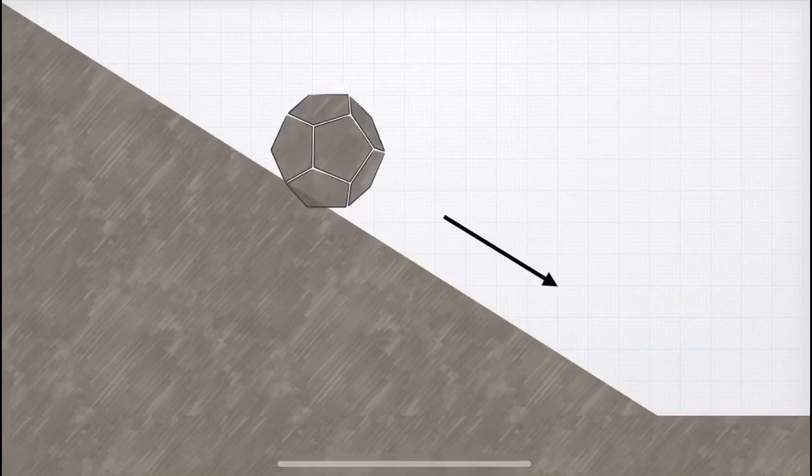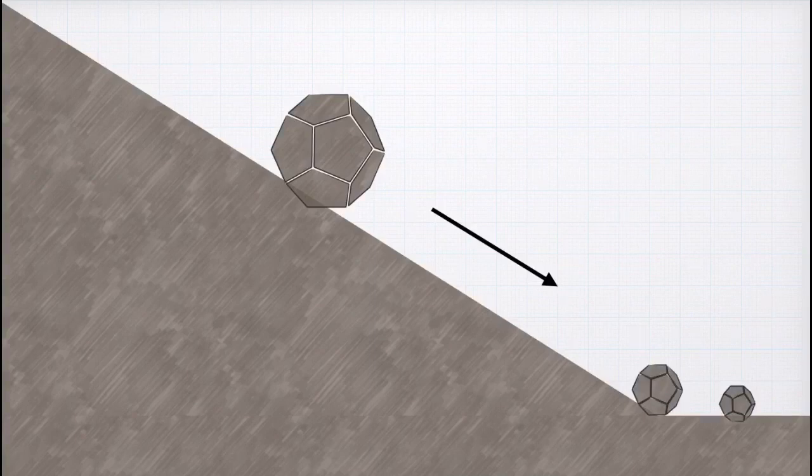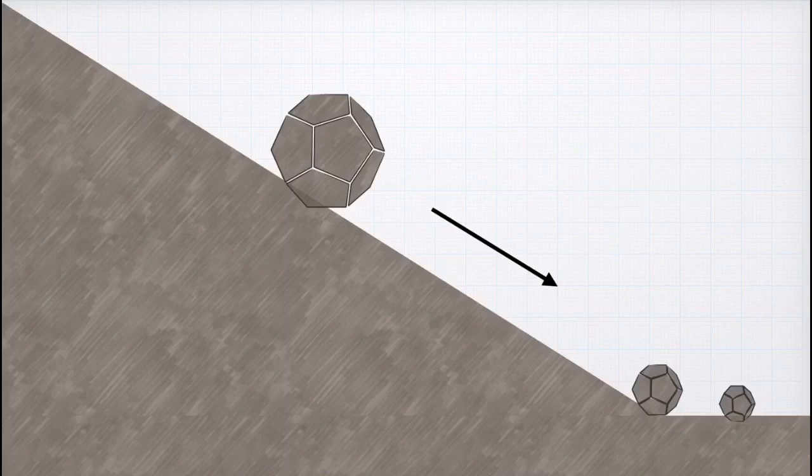Now, students, imagine a big rock rolling down a slope or a hill. So, what will happen? It will get broken into smaller fragments. Right? Here, I have shown two fragments, but it can get broken down into multiple tens, twenties of fragments. So, these small fragments are called sediments. Okay?